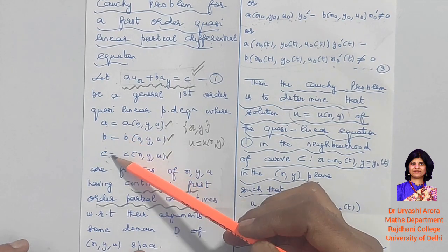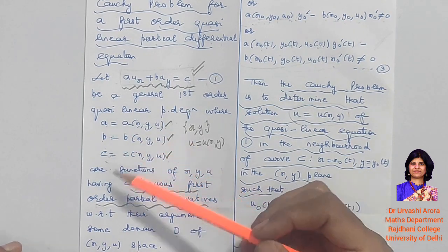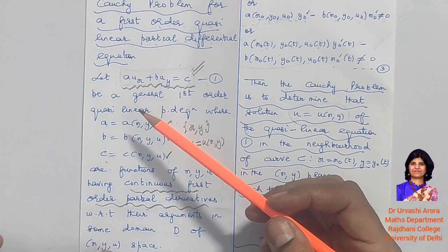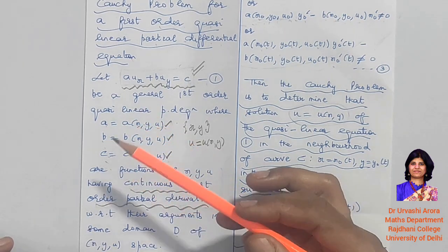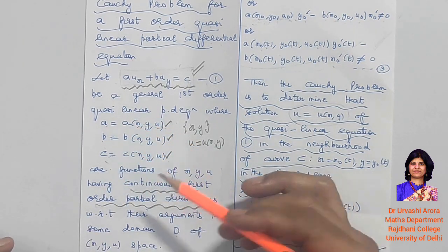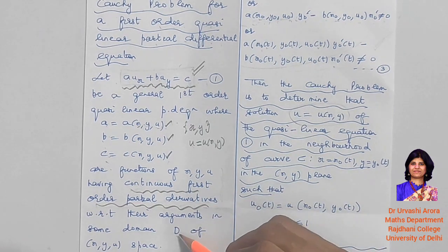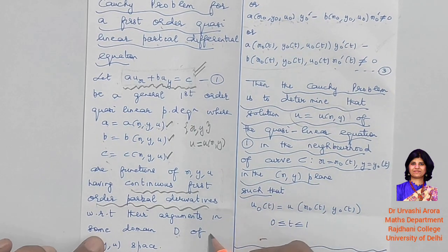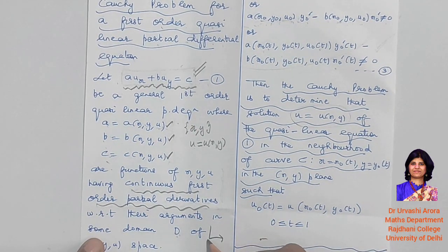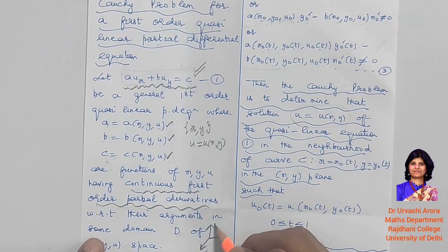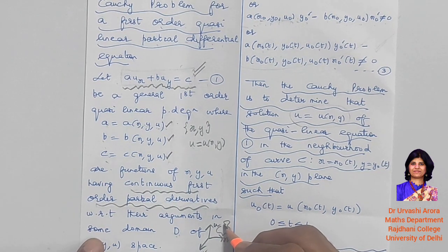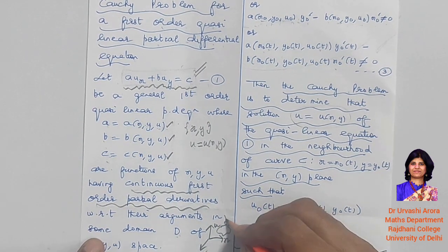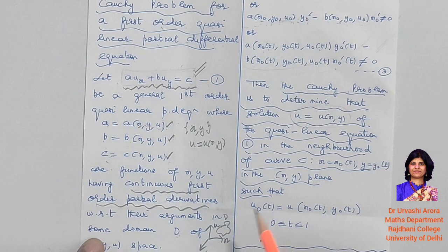We are assuming that a, b, and c can be differentiated once and their derivatives are continuous, and all of this is happening in some domain d of the x, y, u space. So we are working in a three-dimensional space — the x-axis, the y-axis, the u-axis — and there is some domain d in the x, y, u space where everything is happening.